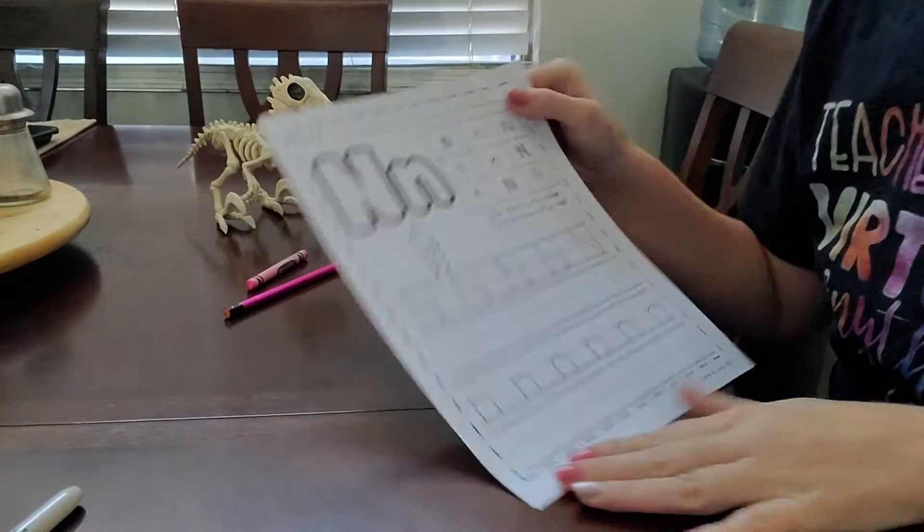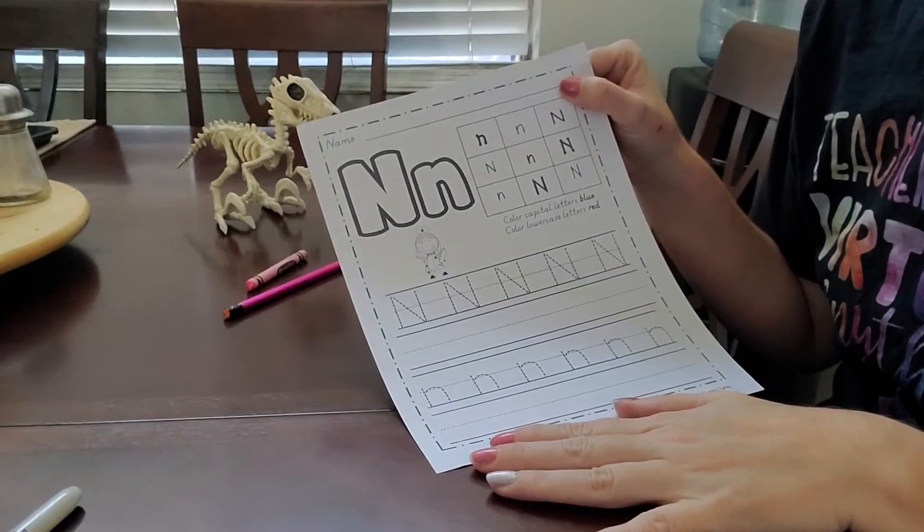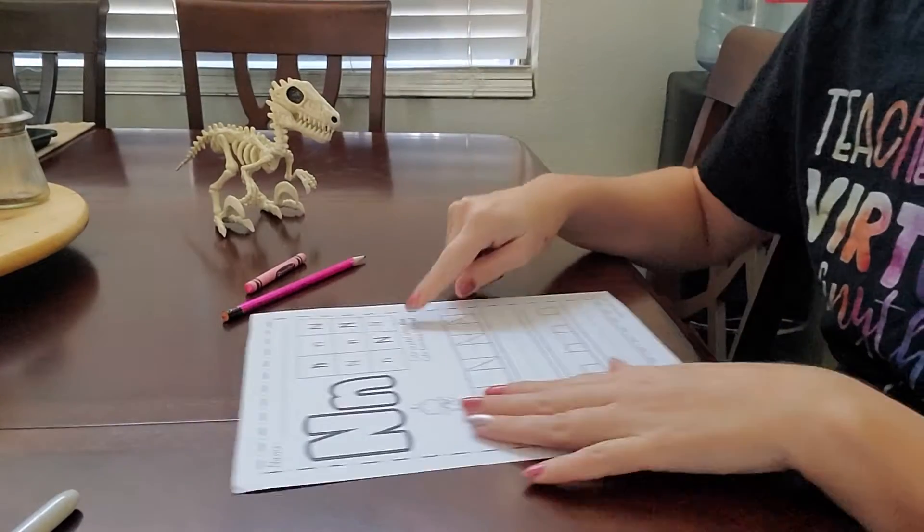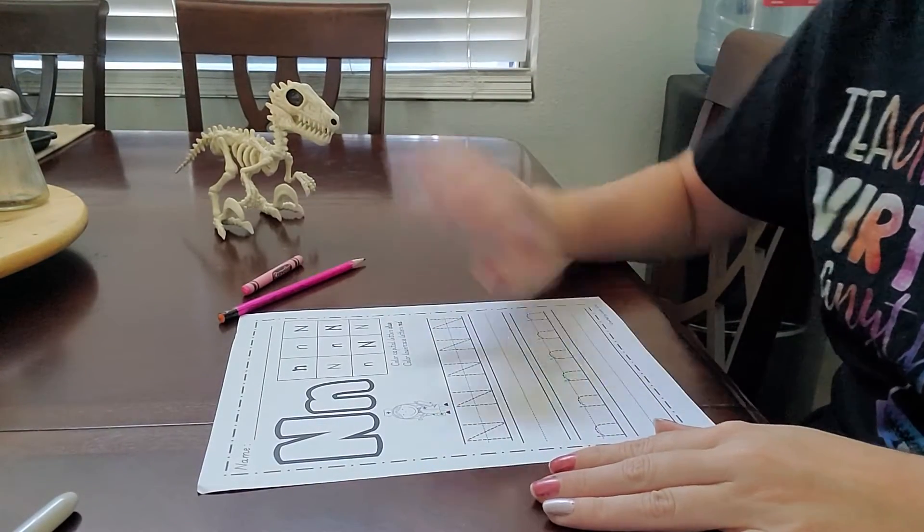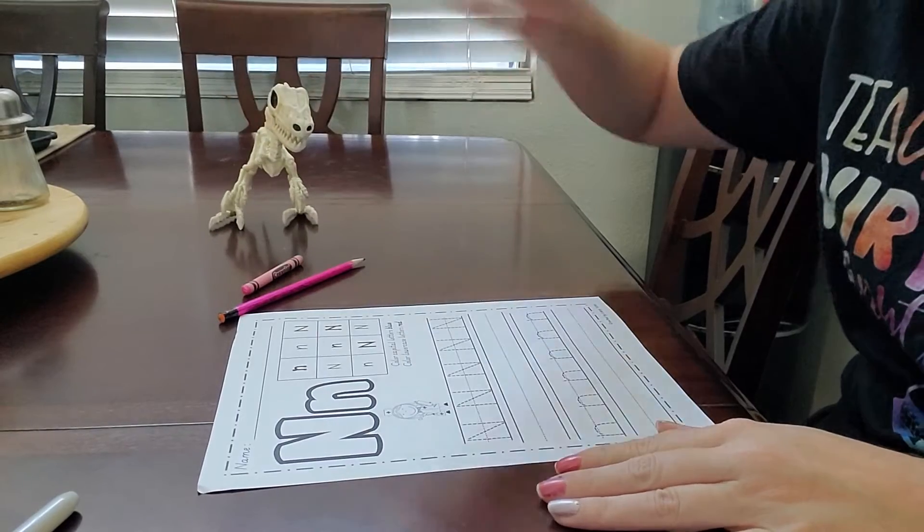Hello, my friends. All right, let's go ahead and get started on our letter N paper. And for this activity, you need your pencil and your crayon. And I have our little friend here to help us as well.